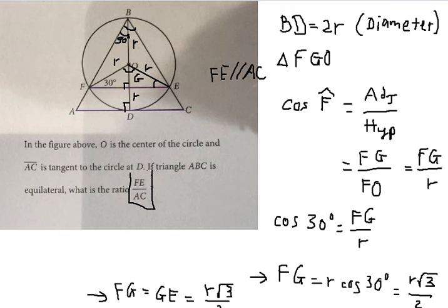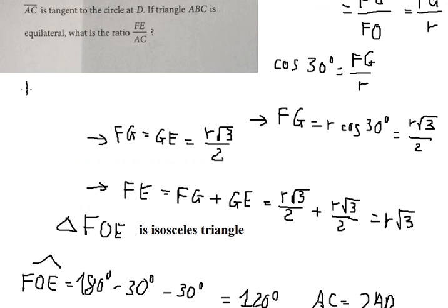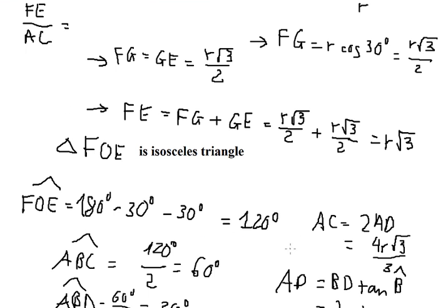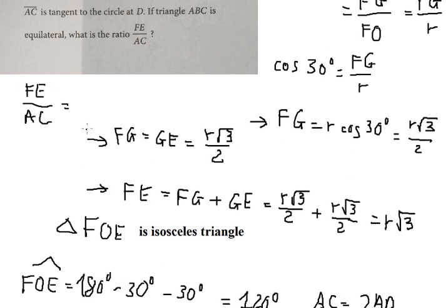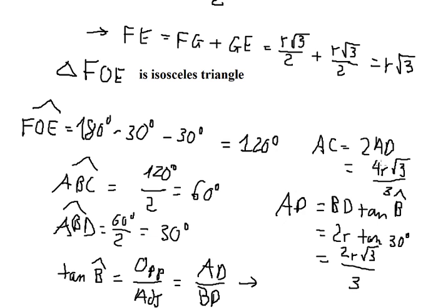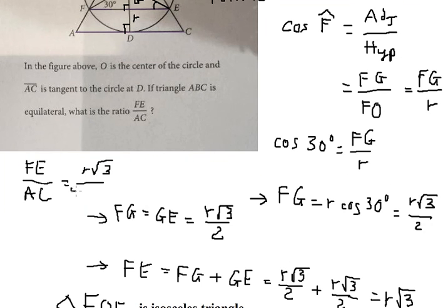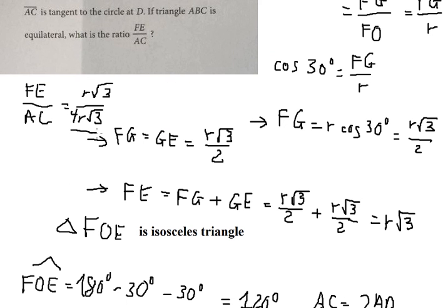Now we have the final answer: FE over AC. FE equals R times the square root of 3, and AC equals 4R times the square root of 3 over 3. We simplify: R√3 divided by (4R√3/3) gives us 3 over 4. The ratio FE over AC equals 3/4.